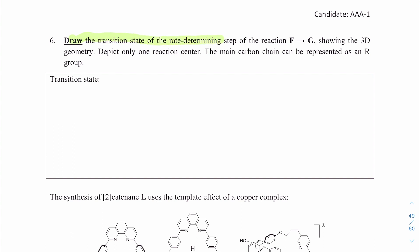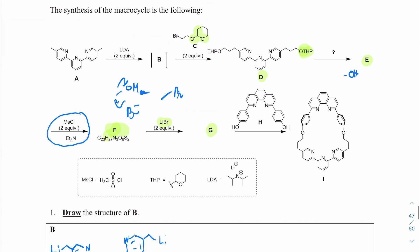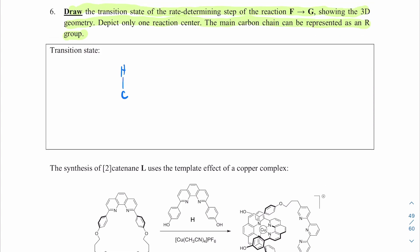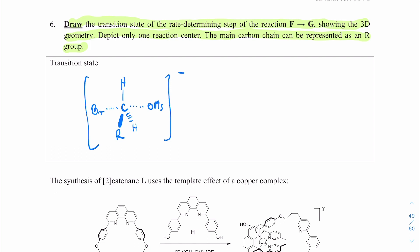Question six: draw the transition state of the rate-determining step of the F-to-G reaction, showing 3D geometry. Since F to G is SN2, the transition state has a central carbon with two hydrogens, one group going to the back, one R group to the front, and half-formed bonds in the plane of the paper — bromide on one side, mesylate (OMs) on the other. The whole thing carries a negative charge, indicated with a double dagger for the transition state.